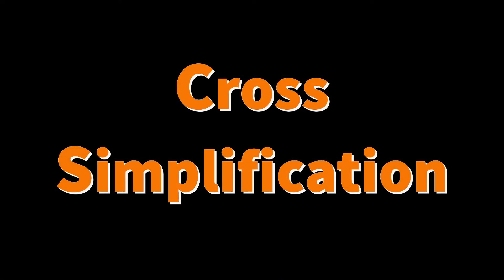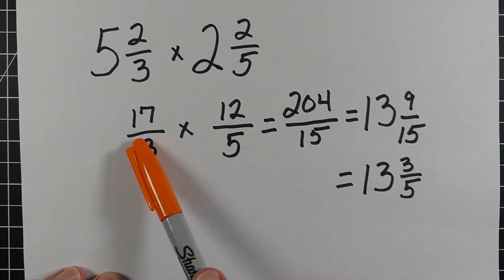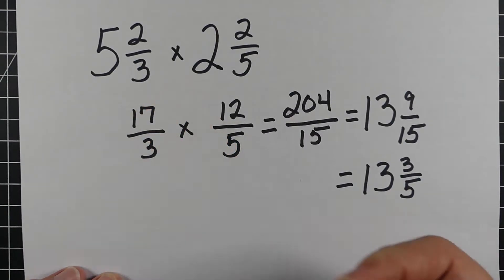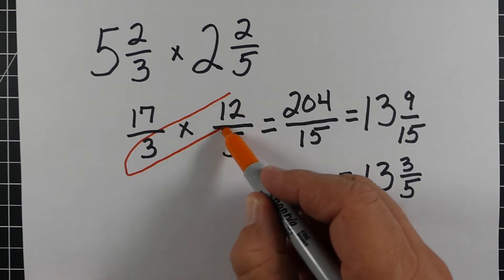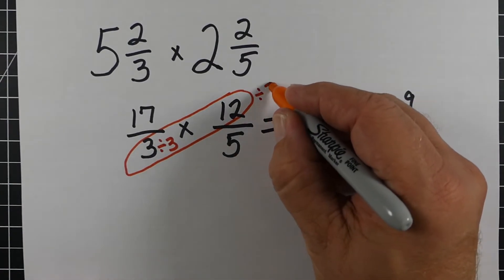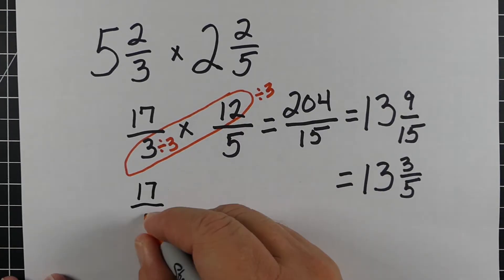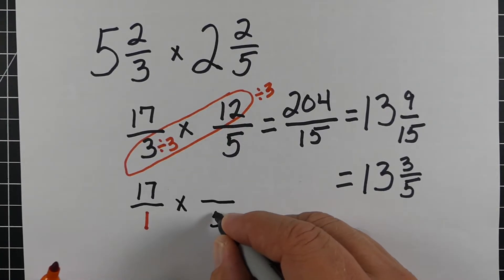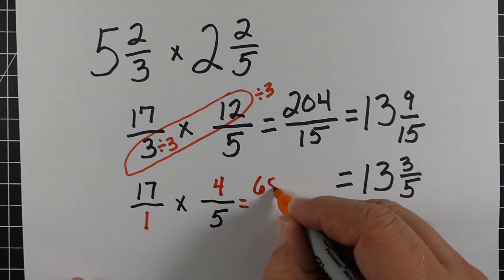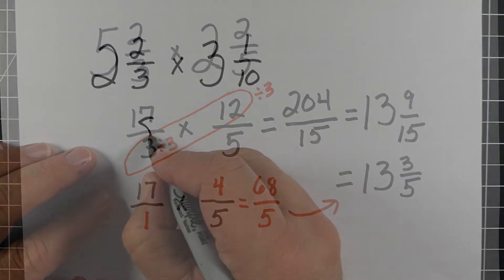One thing you can do to make problems easier is cross-simplification. When you're ready to multiply, you can look diagonally, and if there's a number that will go into both, you can simplify. With the 3 and the 12, three will go into both — three divided by three is one, 12 divided by three is four. So when we rewrite this, it becomes 68 over 5 instead of 204 over 15, which is much easier.